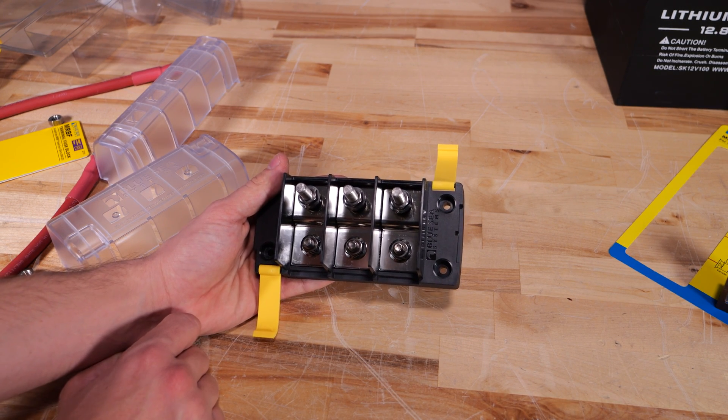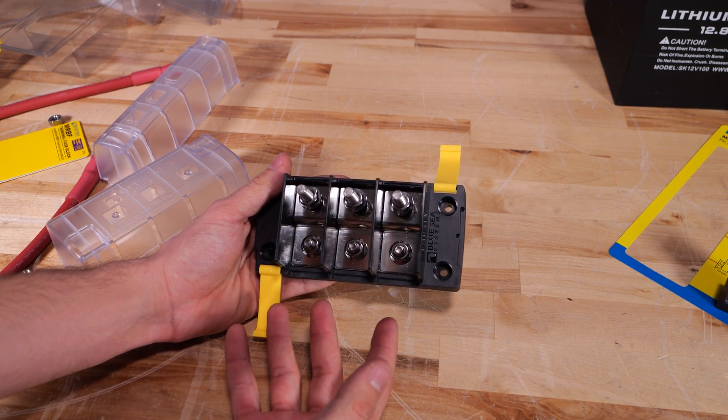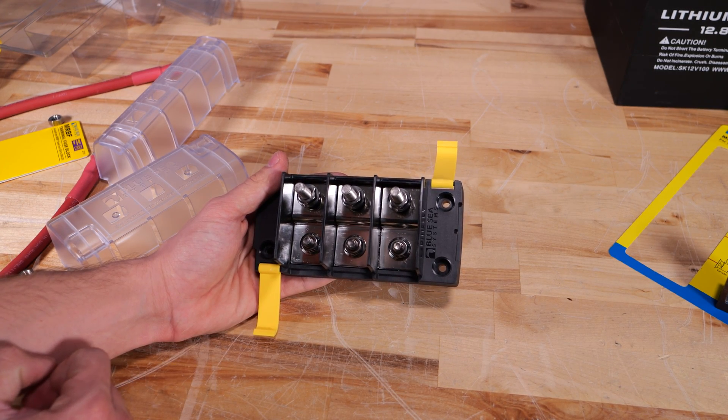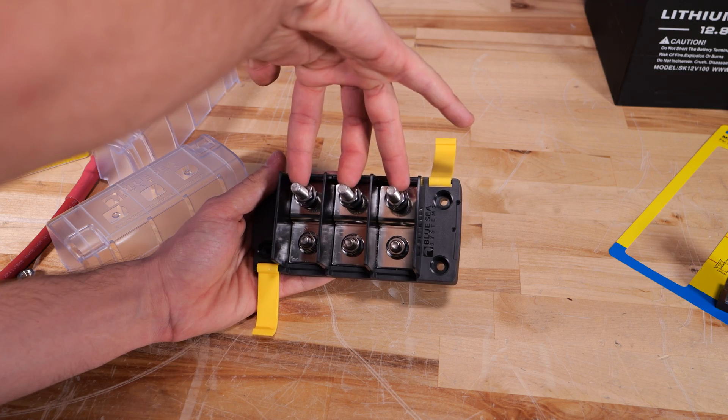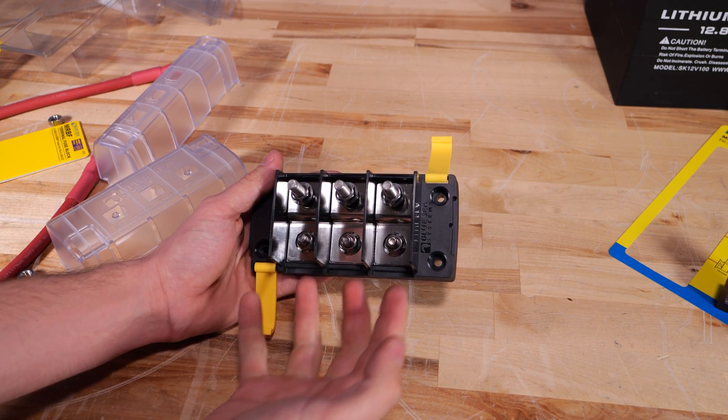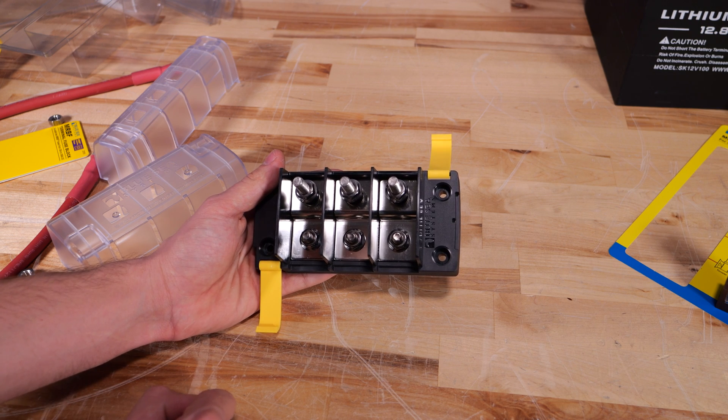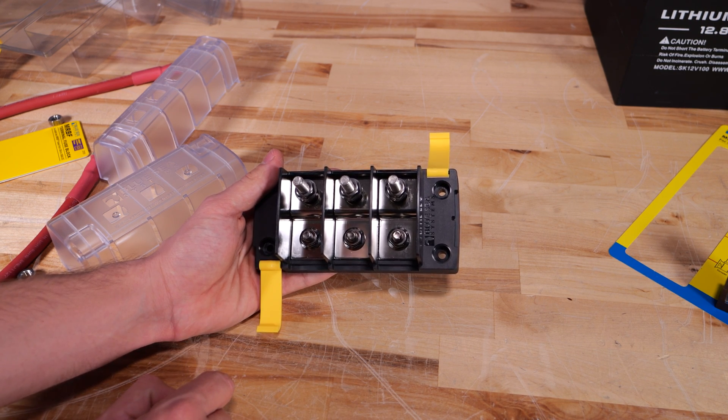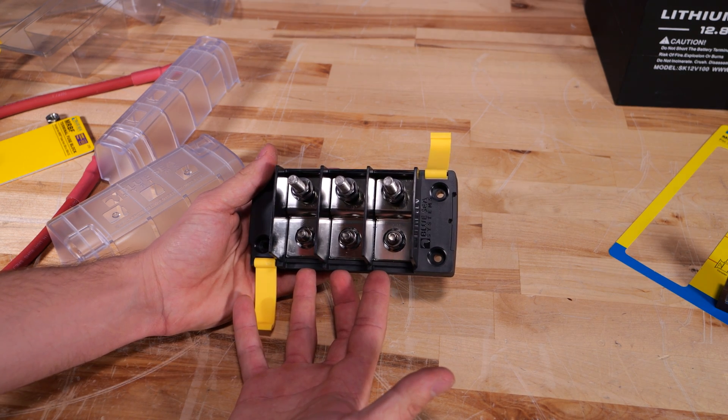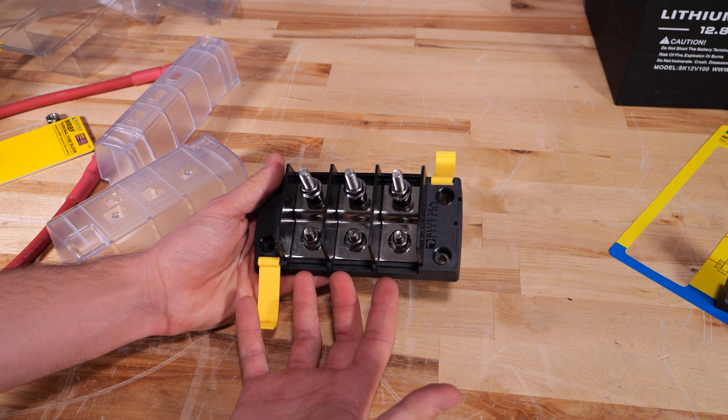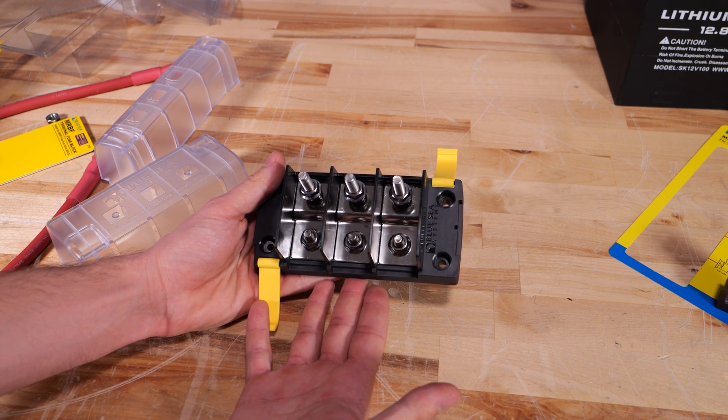So this is really useful if say you have three different battery banks and a three bank battery charger for like a marine application. You can run all three outputs of the battery charger to the terminals and then the other side going to each of your battery banks and they maintain isolation between each of them. Now this is also rated up to 58 volts DC and you can run the same 300 amps of current through it just like all the other products we've seen here today.